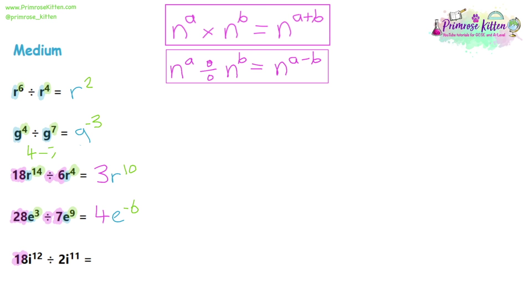For question 5: normal numbers first — 18 divided by 2 is 9. Then look at the letters: I on both sides, so write I. Then look at the powers: power 12 and power 11. Since we're dividing, we take away the powers: 12 take away 11 is 1. One little detail — we don't normally write power 1s. So if you get a 1 in your answer you don't need to write it. We assume anything without a written power is to the power of 1. So we write 9I as the final answer.